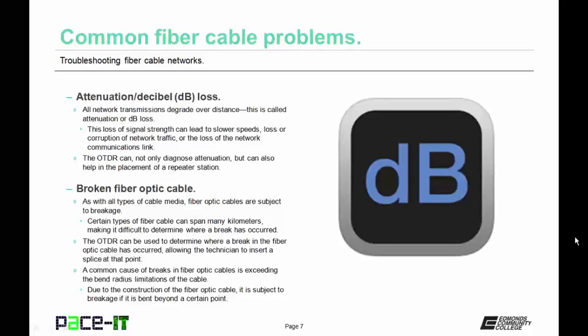Then there's broken fiber optic cables. As with all types of cable media, fiber optic cables are subject to breakage, and in some cases they are more delicate than other types of media. Certain types of fiber cable can span many kilometers, making it difficult to determine where a break has occurred. The OTDR can be used to determine where a break has occurred, allowing the technician to insert a splice at that point. A common cause of breaks is exceeding the bend radius limitations of the cable, as fiber optic cable is subject to breakage if bent beyond a certain point.